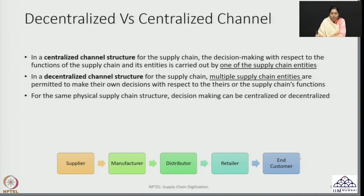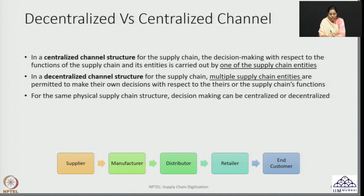For the same physical structure — supplier, manufacturer, distributor, retailer, and end customer — we could have a scenario in which the manufacturer takes all decisions: how much should be purchased, how much distributed, where it should be positioned, how much should be sold to or by the retailer, and what prices the retailer offers to end customers. That would be controlled entirely by the manufacturer in a centralized model. At the same time, for another supply chain with the same structure, these decisions can be completely decentralized — the retailer decides what price to mark on the end product, and the manufacturer might not have any say on that aspect.